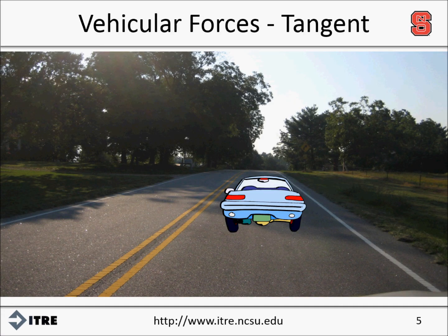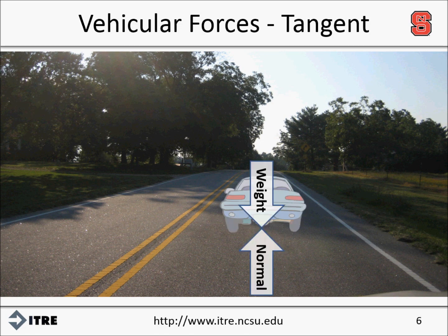On a tangent roadway section, several forces exist between the roadway surface and the vehicle. There are no significant lateral forces on a vehicle traveling in a straight line, but there is a force from the weight of the vehicle and a normal force that opposes the vehicle's weight. The weight of the vehicle is a function of the mass of the vehicle and gravity. A friction force between the tires of the vehicle and the pavement is also present, but not shown in this picture since the friction is acting along the path of the vehicle. This description is focused on lateral and perpendicular forces.